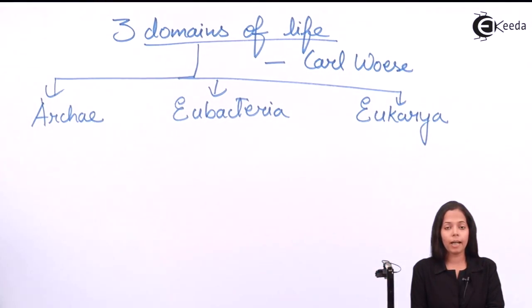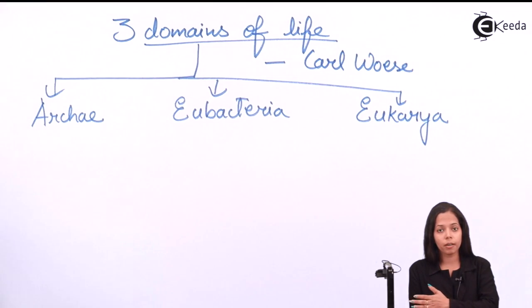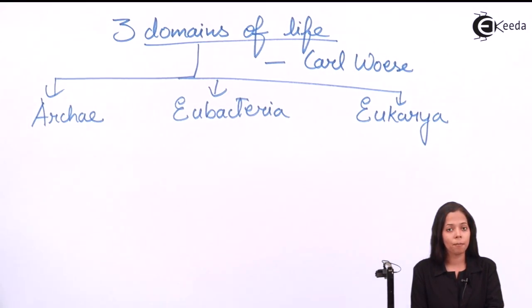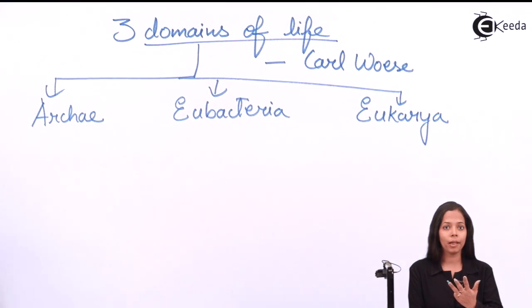Under Archaea domain comes kingdom Archaebacteria. Under Eubacteria comes kingdom Monera. Under Eukarya comes all those kingdoms which have eukaryotic cells. You all know except Monera, rest all four have eukaryotic cells, so remaining four kingdoms - Protista, Fungi, Plantae, and Animalia - fall under domain Eukarya.